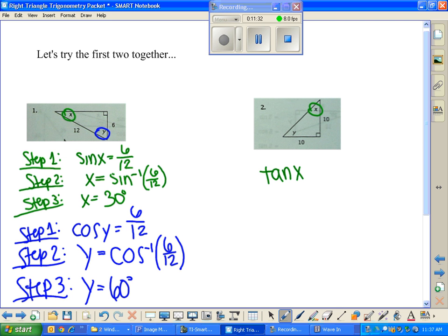Tangent of X. Yeah, we don't even have the hypotenuse. We couldn't even use sine or cosine. Tangent of X is 10 over 10. We isolate that by doing tangent inverse of both sides. That eliminates the tangent on the left side. We're left with tangent inverse of 10 over 10, or 1. On the right, we type it into the calculator. We get 45 degrees. Do we agree? Yep. Okay, very nice. 45 degrees.